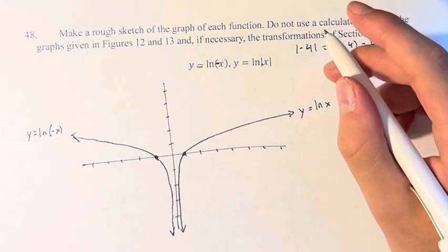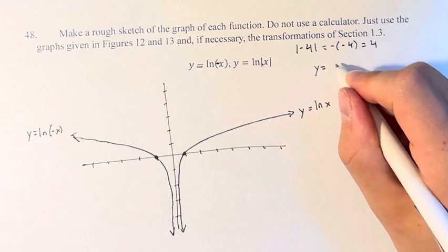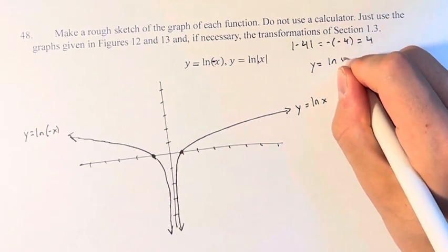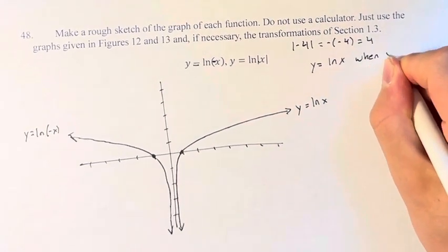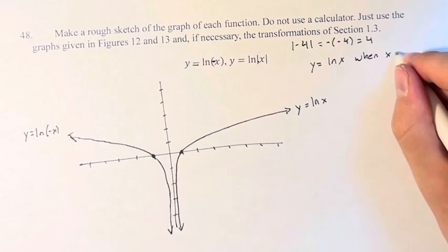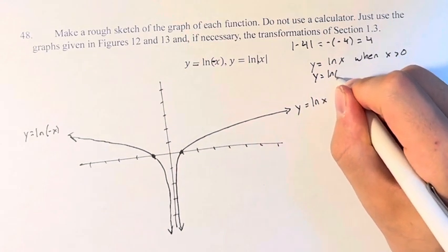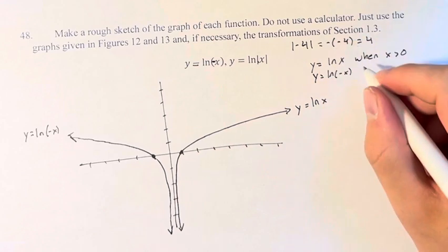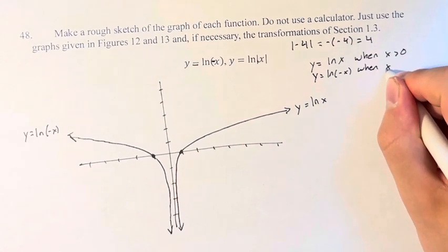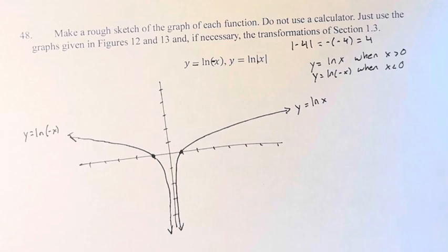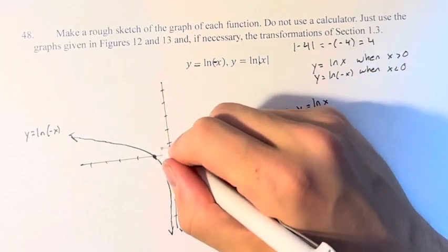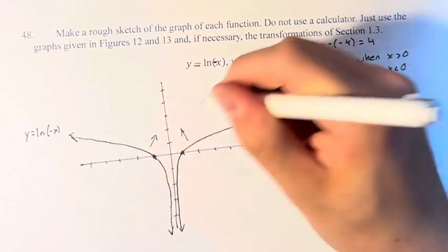So if y = ln(x) when x > 0, and y = ln(-x) as we can see up here when x < 0, what is the graph of this function? Well, it's these two graphs combined.